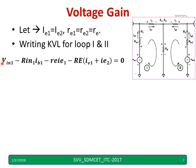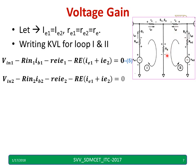The equation for loop 1 is: VIN1 minus RIN1 times IB1 minus RE times IE1 equals zero, where RE carries both IE1 and IE2. This is equation number 5. Similarly, for the second loop we write the equation: VIN2, RIN2, RE, and IE2 are included, and RE also carries both IE1 and IE2. This is equation number 6.